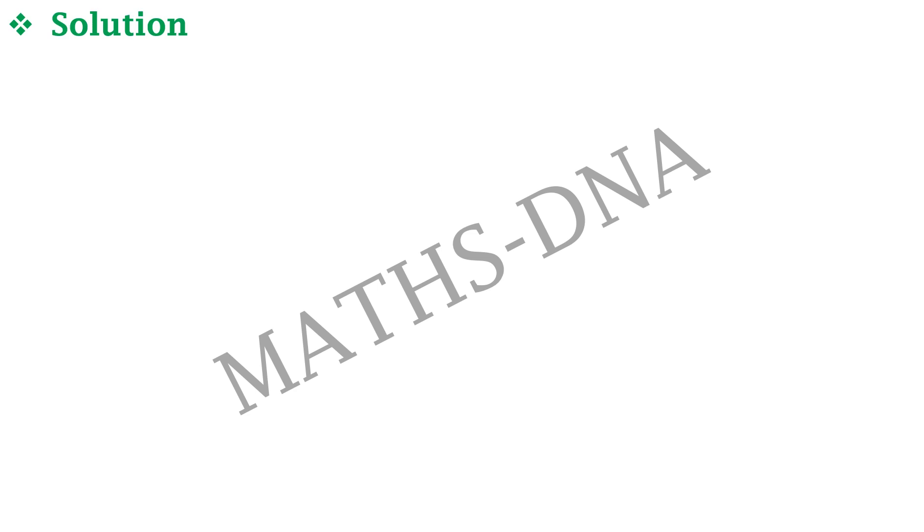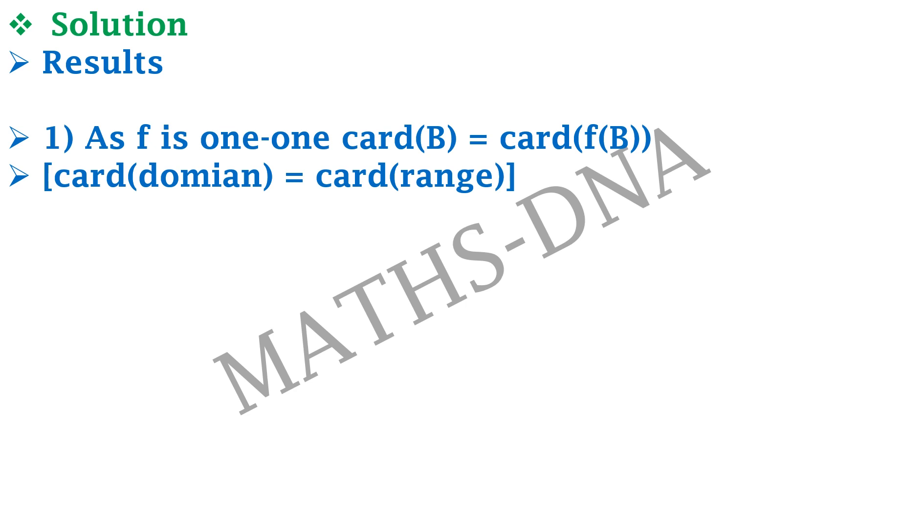To solve this question we will need some results. So the first result: as F is one-to-one, which simply implies that cardinality of B equals cardinality of F(B), that is cardinality of domain equals cardinality of range, as F is one-to-one.